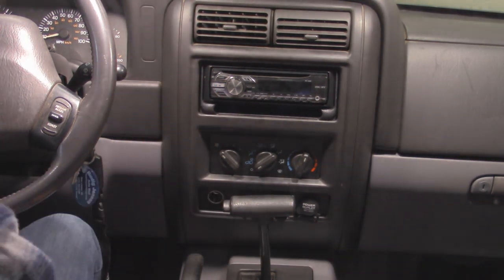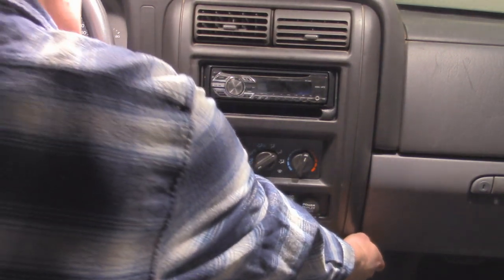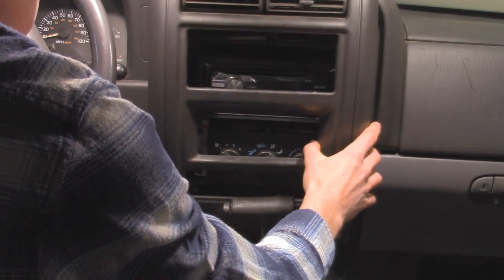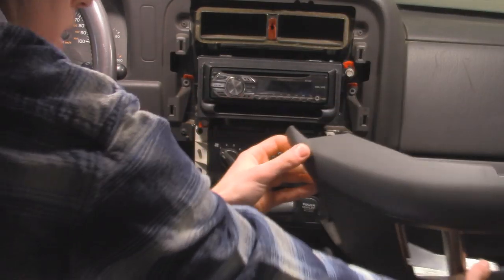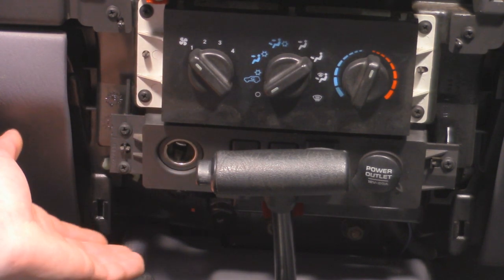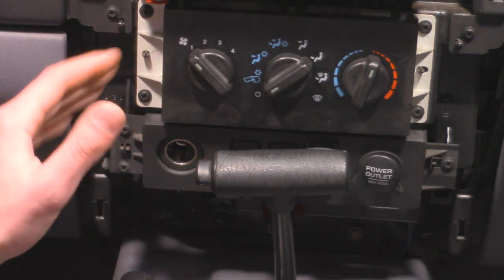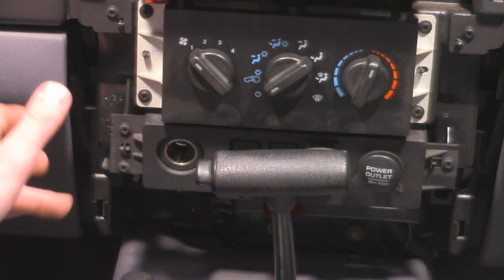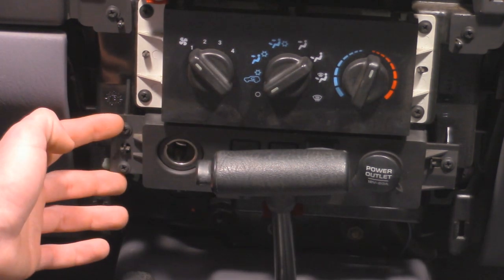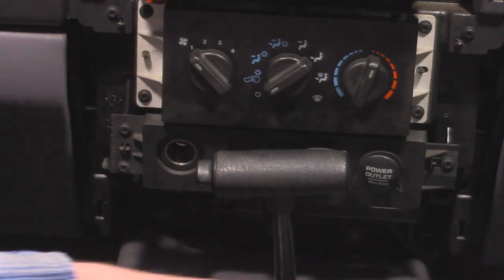And now we're going to take off the center bezel and to do that we just got to pry on the bottom corners and it just pops out like that. Put that to the side. All right, so now we can see our bottom control panel here and we're actually going to be removing this from the Jeep. It's going to make the job a heck of a lot easier. So to do that we basically got two Phillips screws on the left-hand side and then one on the right.